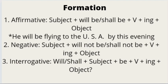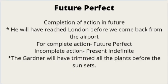If your sentence is negative, it begins with subject, will not be or shall not be, verb plus -ing, and object. If your sentence is interrogative: will or shall, subject, be, verb plus -ing, and object.